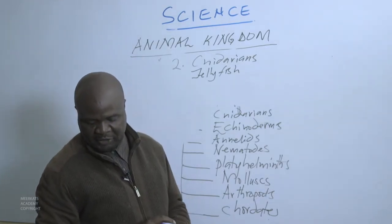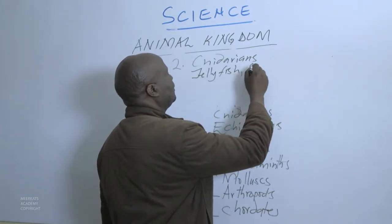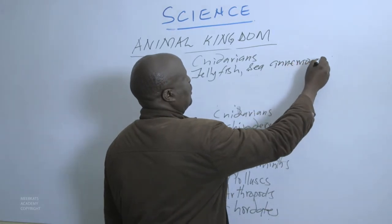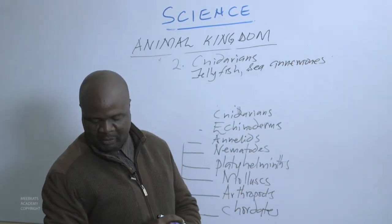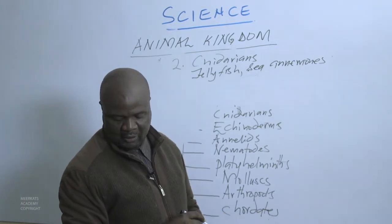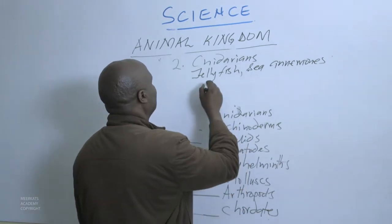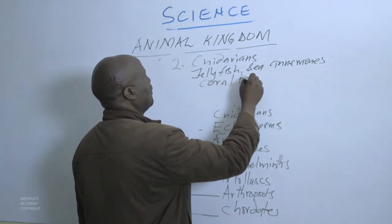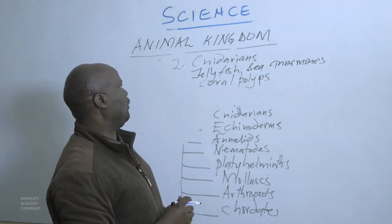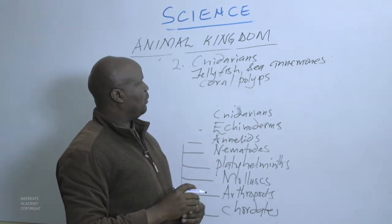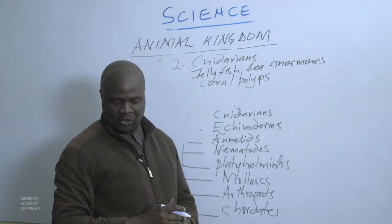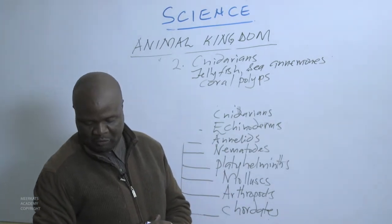Apart from jellyfish, we have the sea anemones and the coral polyps. Coral polyps are also in this group of Cnidarians. When these coral polyps die, they form the coral reefs that we know of.